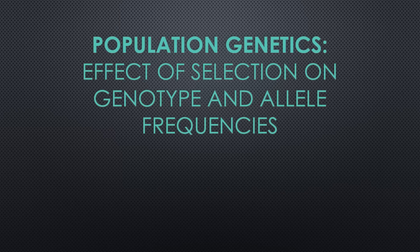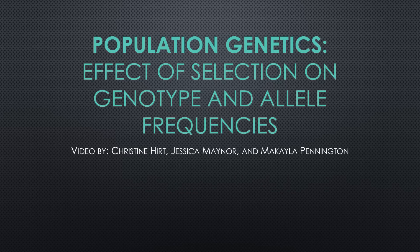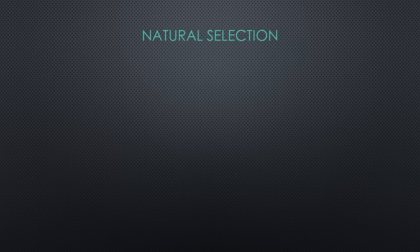Today we are going to discuss population genetics, specifically focusing on how natural selection affects genotype and allele frequencies. Natural selection occurs when certain individuals in a population have adaptive traits that allow them to reproduce more or produce more viable offspring than those without the adaptive trait. Individuals who reproduce more successfully are said to be more fit, and selection occurs due to the differential fitness of traits.